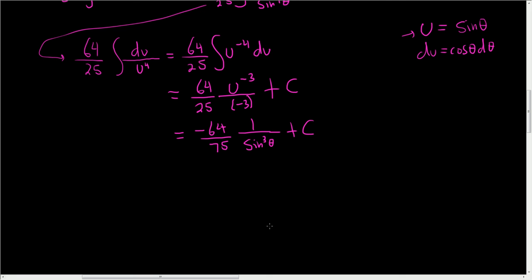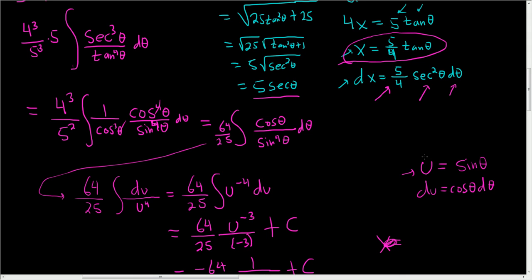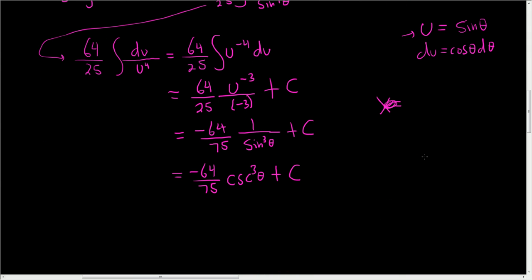Let's keep going. We know something about 1 over sine. It's cosecant. So this is negative 64 over 75 cosecant cubed of theta plus c. But we're not done. We have to go back and use our substitution. If you recall, we said that x is equal to... Oh, no, our original sub... Our first one. Let's go back and look. The very first one we used. 4x equals 5 tan theta. That's the first one we used.